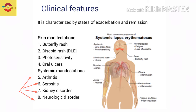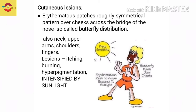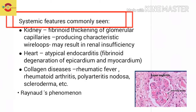The cutaneous lesions include erythematous patches in a roughly symmetrical pattern over the cheeks across the bridge of the nose, called the butterfly distribution since it resembles a butterfly. It is also seen in the neck, upper arms, shoulders, and fingers. The lesions have itching and burning sensation, hyperpigmentation is evident, and these features are intensified by sunlight.